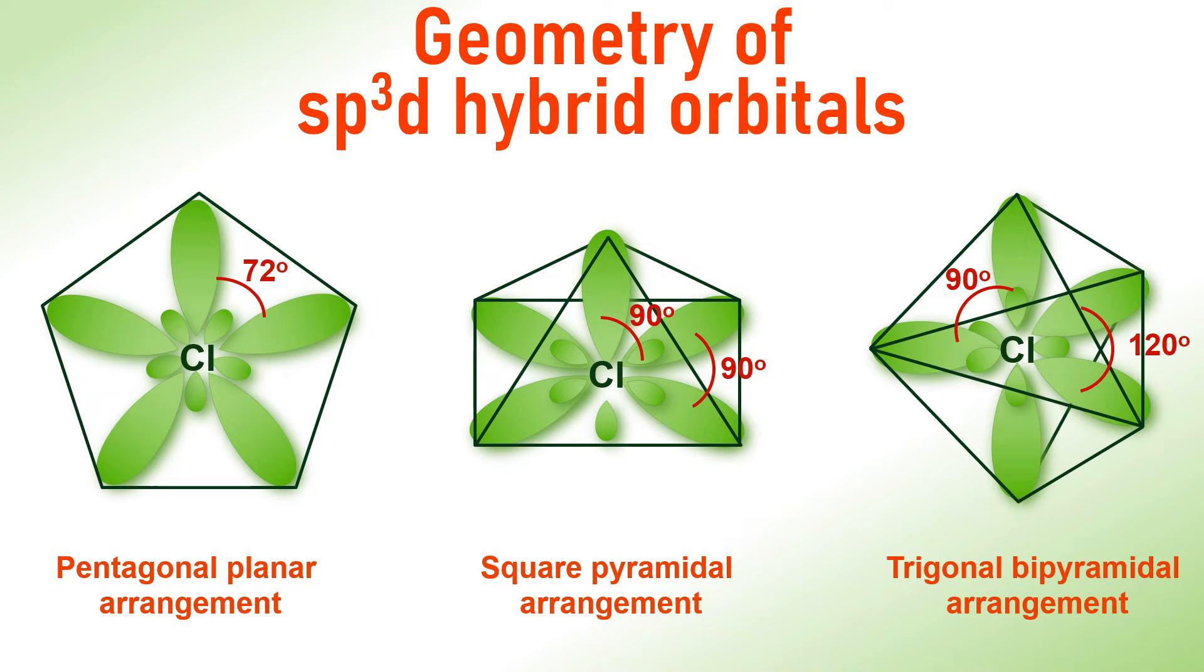Therefore, the clear winner is trigonal bipyramidal arrangement with 120 degrees and 90 degrees of angles with each other and hence the sp3d orbitals prefer to orient in trigonal bipyramidal geometry.